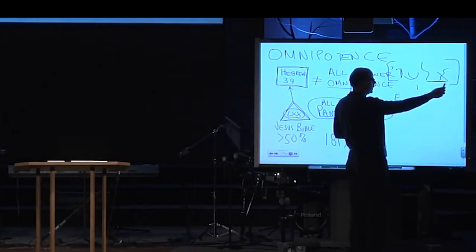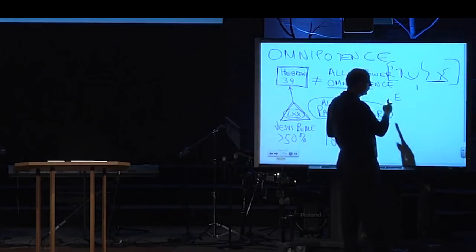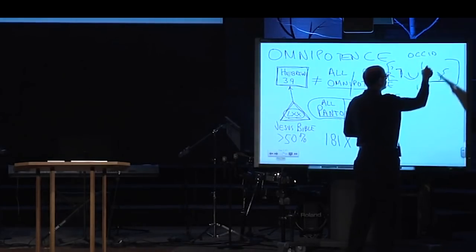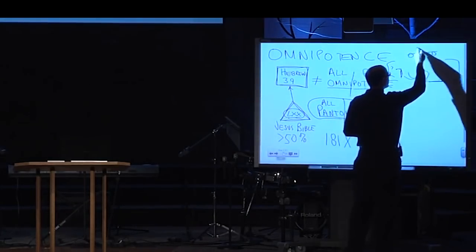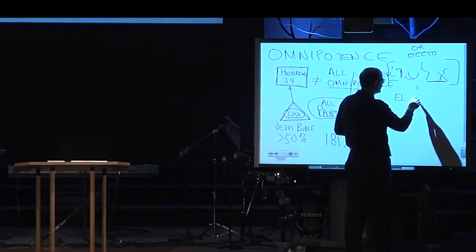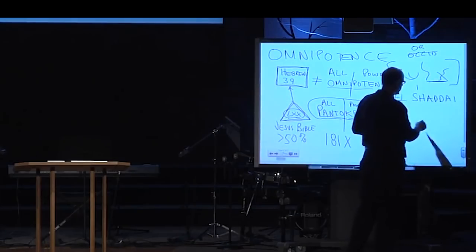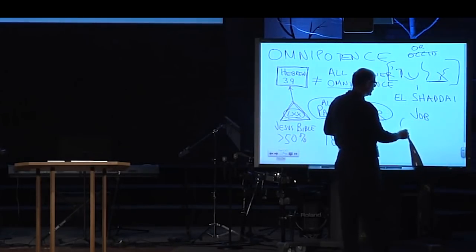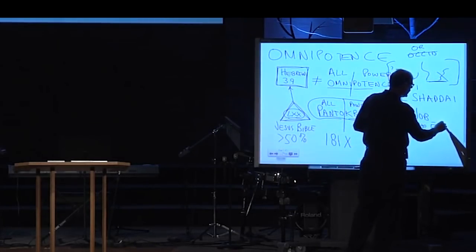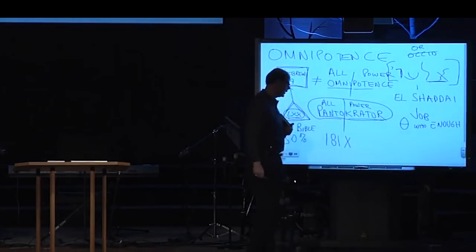Remember they write from the east to the west, the Hebrews do, and we write from the west to the east. This is an Oriental language and we're an Occidental language, so we write the opposite way. But the El Shaddai is the most prevalent name of God in the book of Job, and it means the God who is enough, the God who is enough. And so that's an all-powerful God, the God who is enough of everything or anything you need.